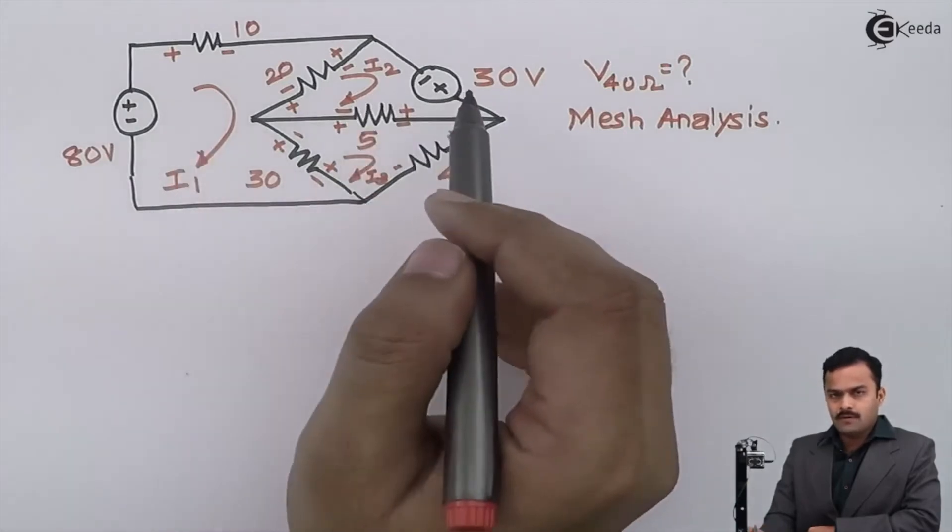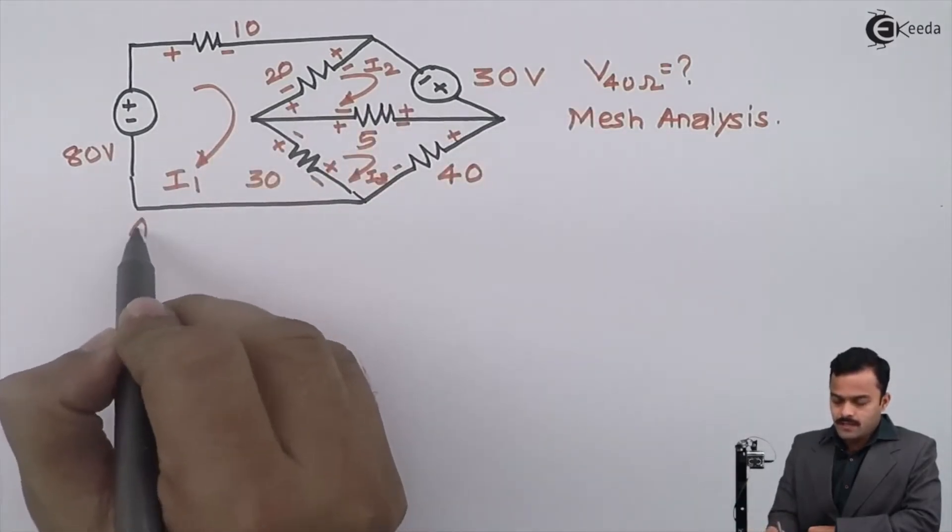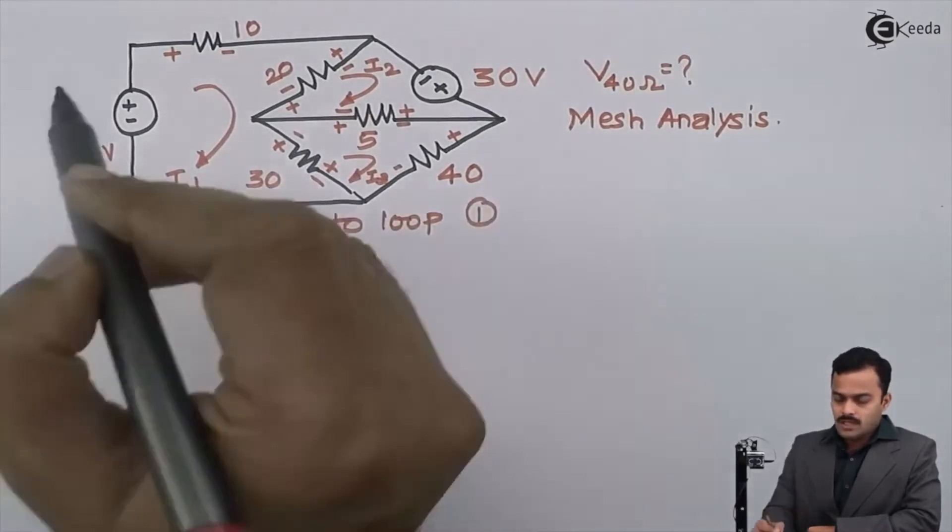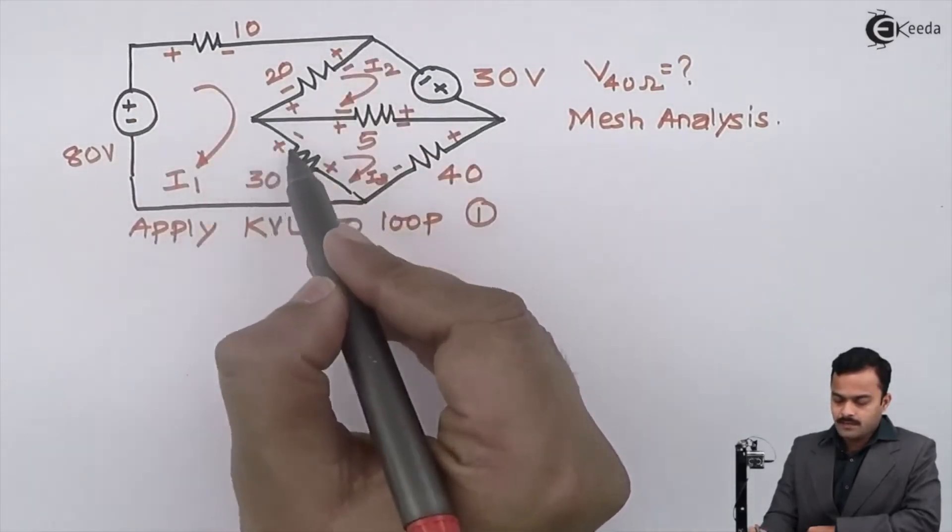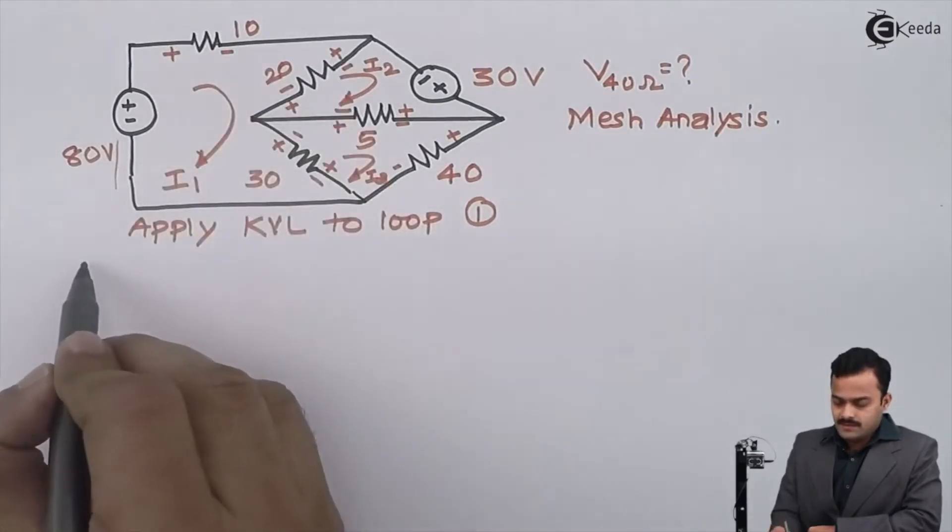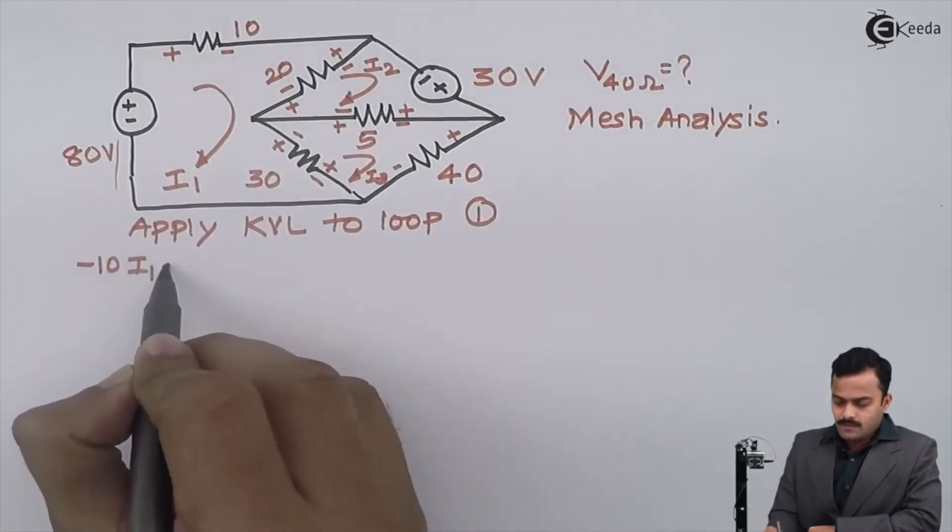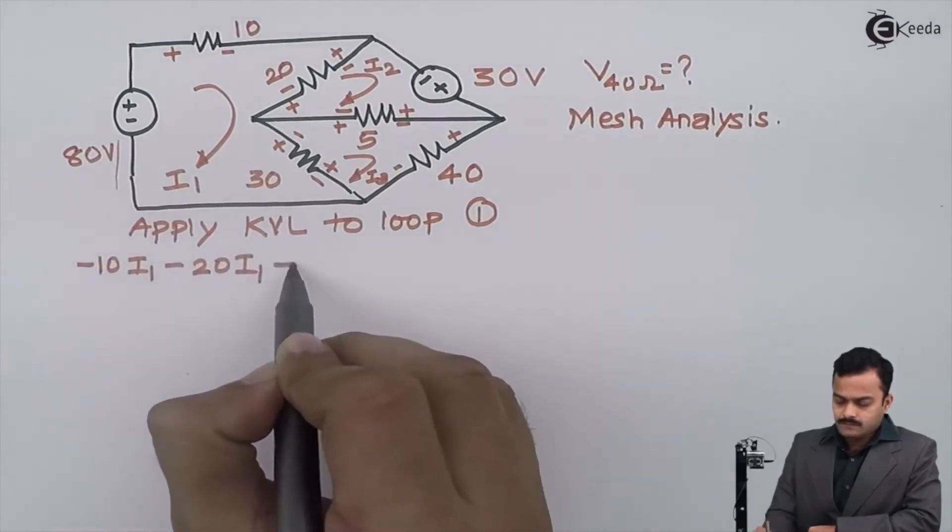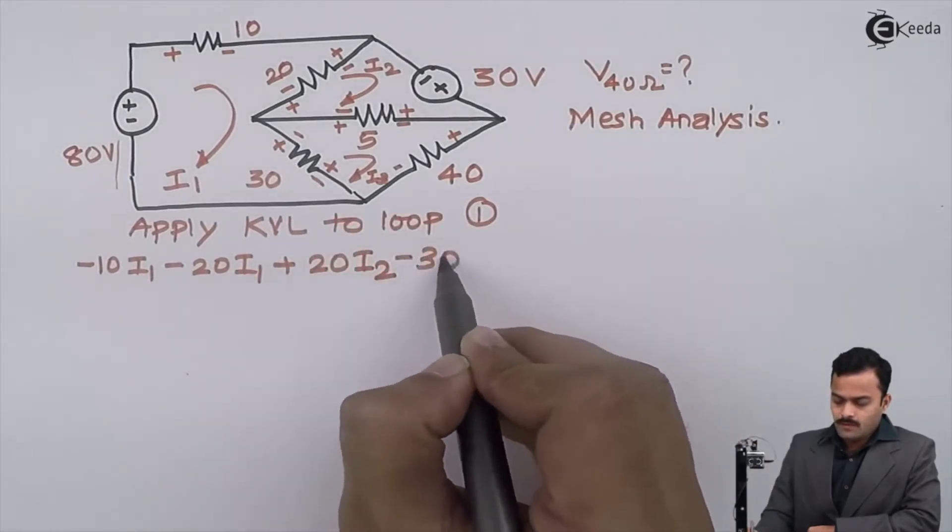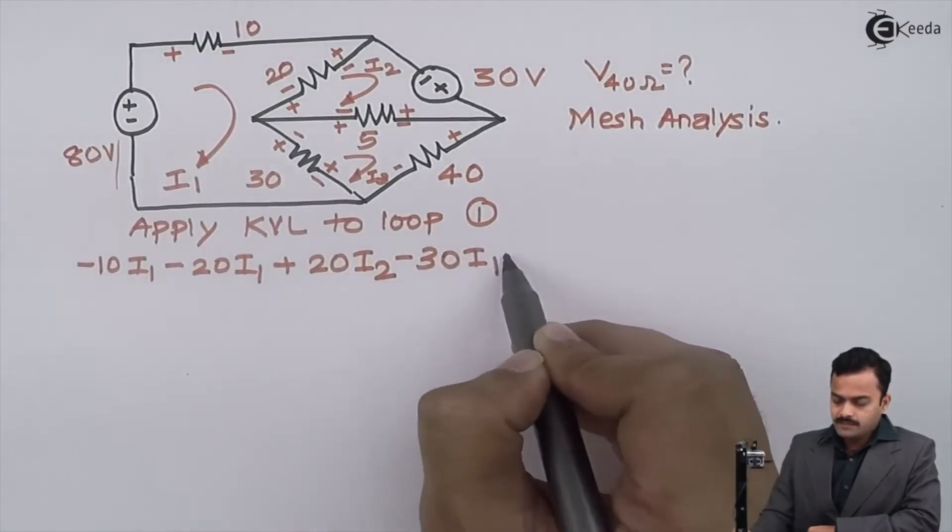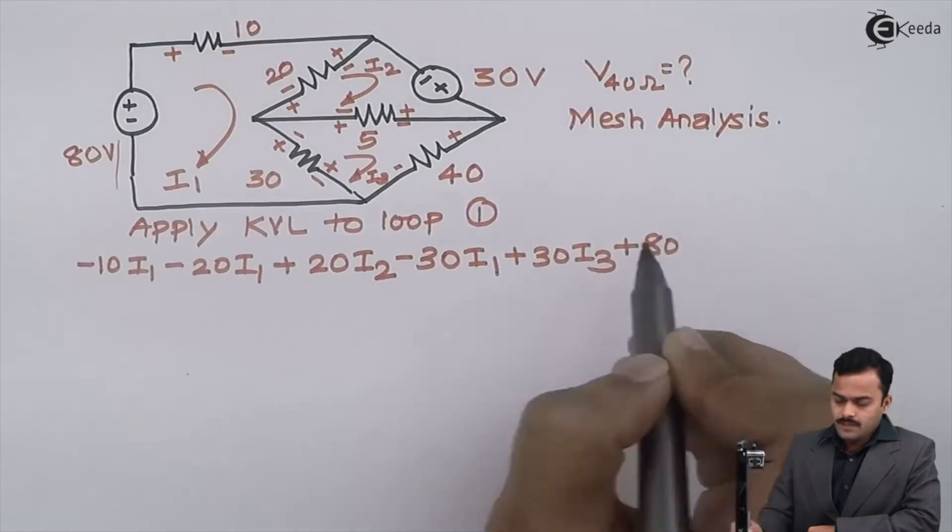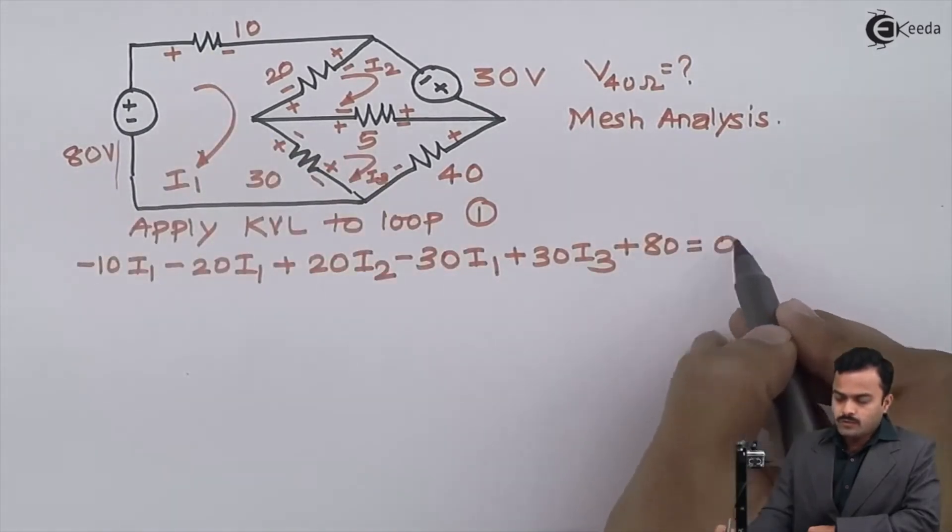So let's apply KVL to loop number one. I will start from this point and trace a path like this. So plus minus, so it's minus 10 I1, minus 20 I1 plus 20 I2, minus 30 I1 plus 30 I3, plus 80 equal to 0.